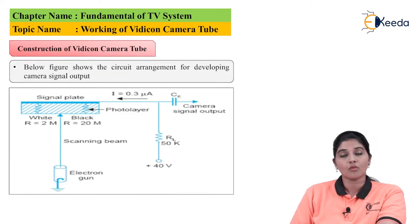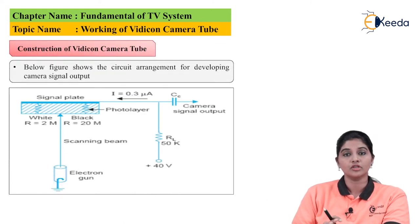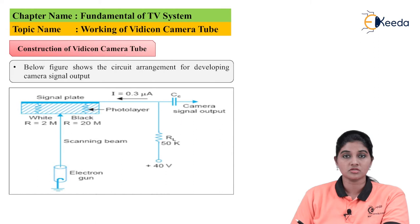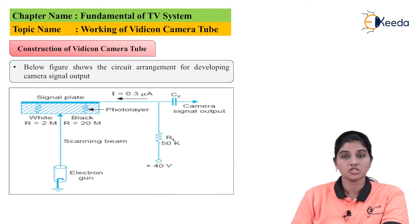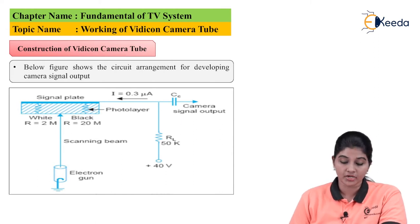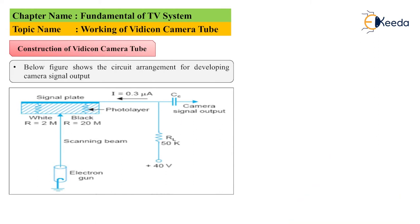Whenever we connect the Vidicon camera tube in the circuit, a load resistance of 50KΩ is required to be connected before applying signal to the camera output, along with a coupling capacitor which acts as a filter.